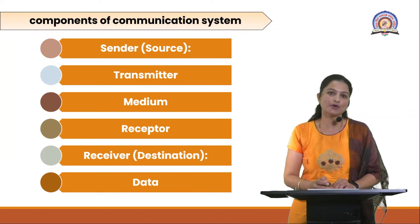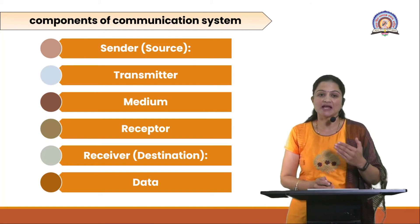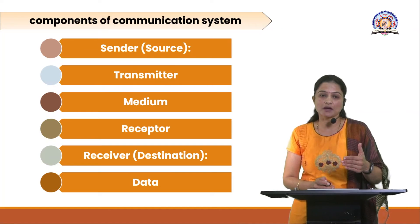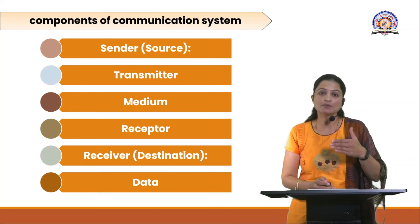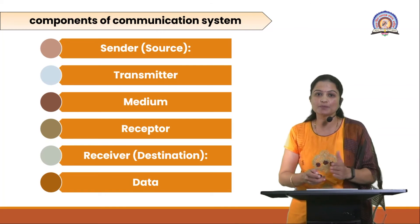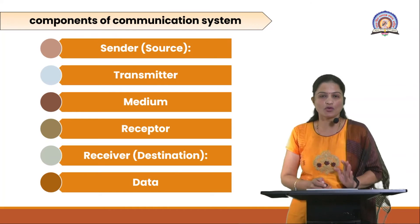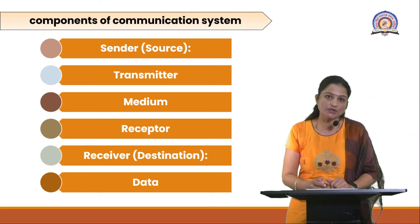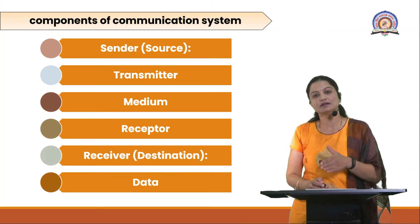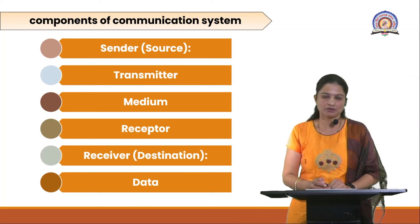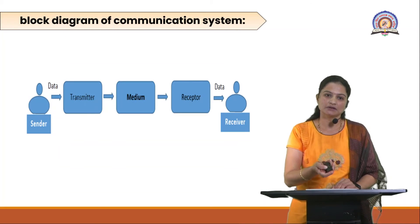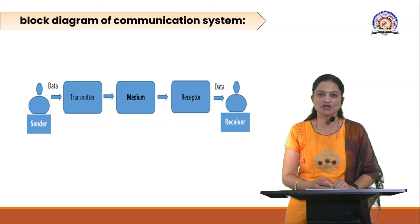The most important component is data — the data which we are going to transmit. It plays a very important role because the main goal of the communication system is to send data properly and preserve it properly. That is why data is the most important component, because encoding and decoding operations are performed on the data using the transmitter and receptor. These are the components used in the communication system, as shown in the block diagram.